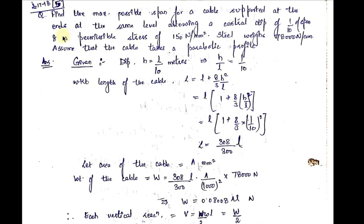Good morning everyone. Today we will do one more numerical on the topic of cables subjected to UDL. The numerical is: find the maximum possible span for a cable supported at the ends at the same level, allowing a central dip of 1/10th of the span and a permissible stress of 150 N per mm². Steel weighs 78,000 N per cubic meter. Assume that the cable takes a parabolic profile.